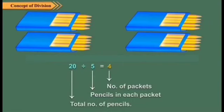So it means 20 divided by 5 is equal to 4. Here 20 is the total number of pencils, 5 is the number of pencils in each packet and 4 is the number of packets. So the division part is 20 divided by 5 is equal to 4.